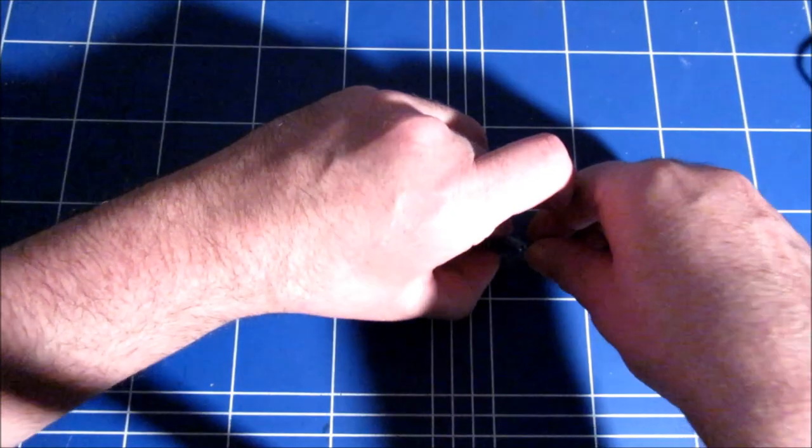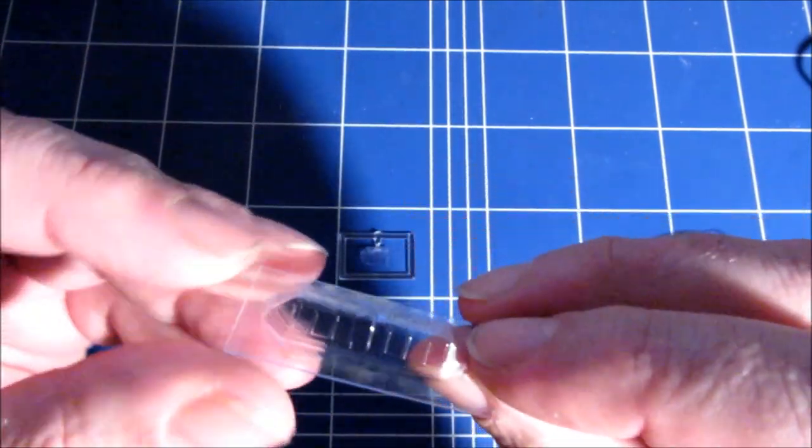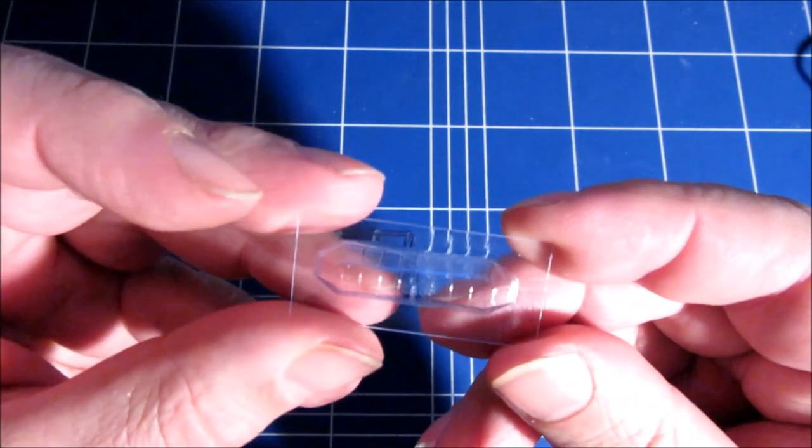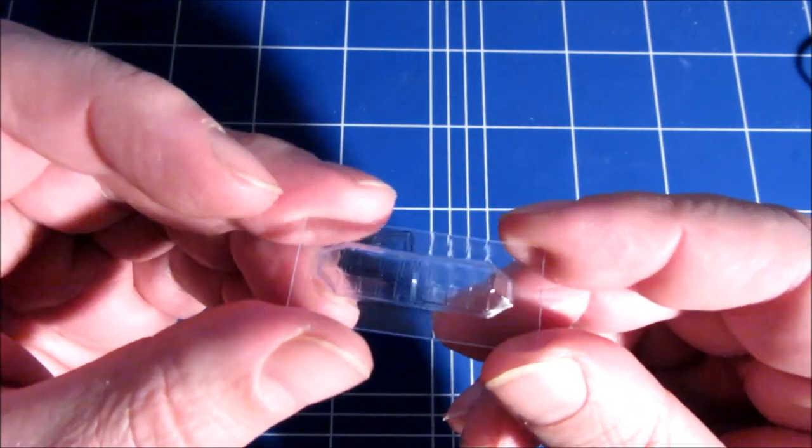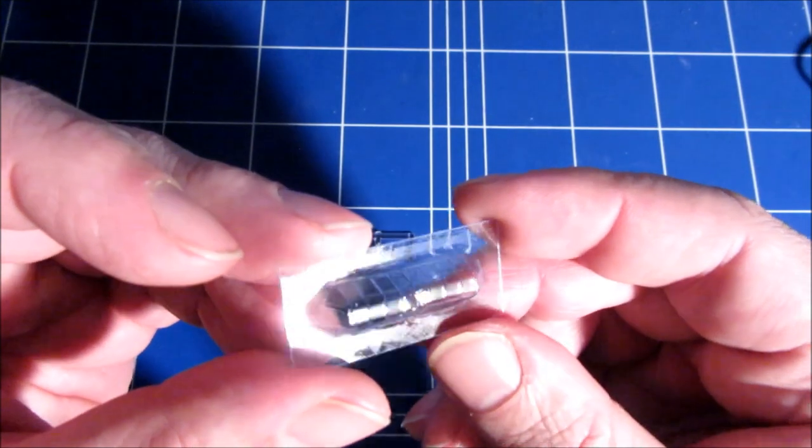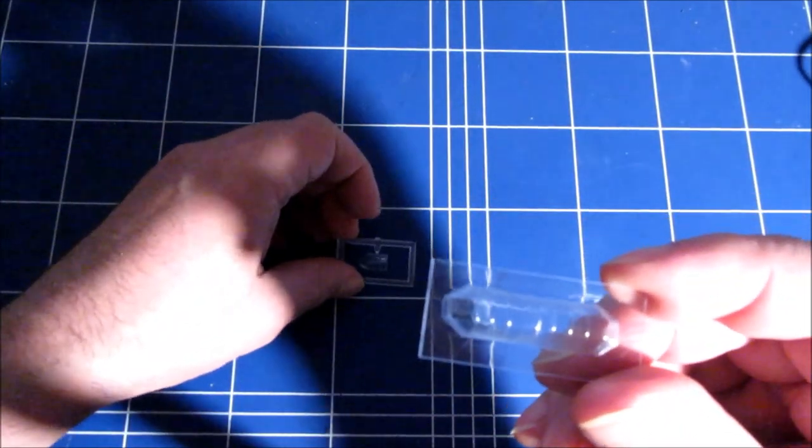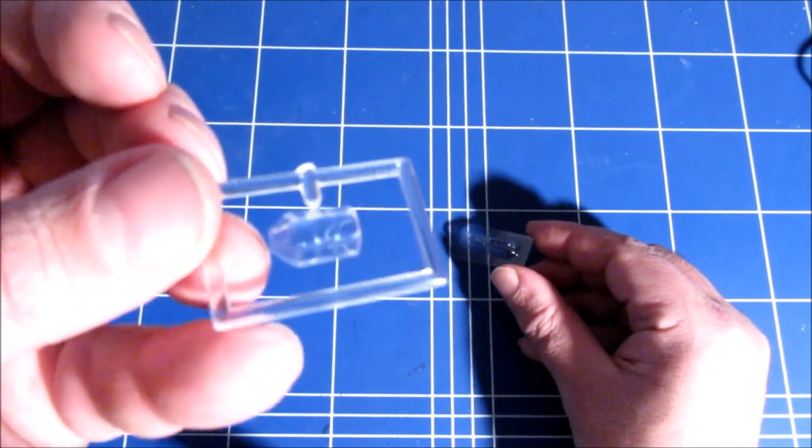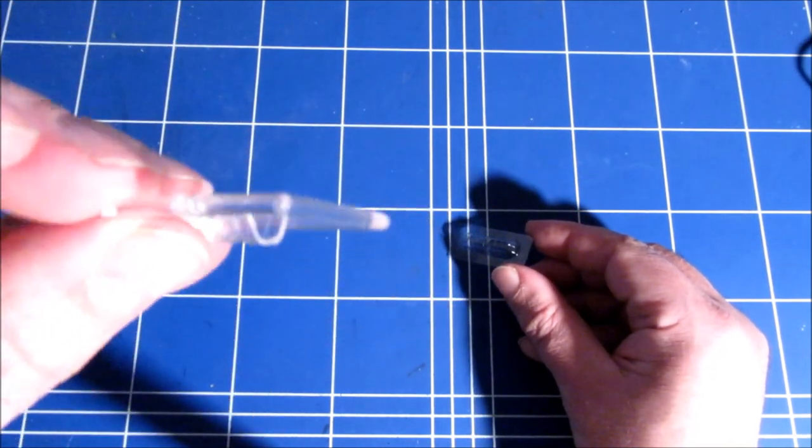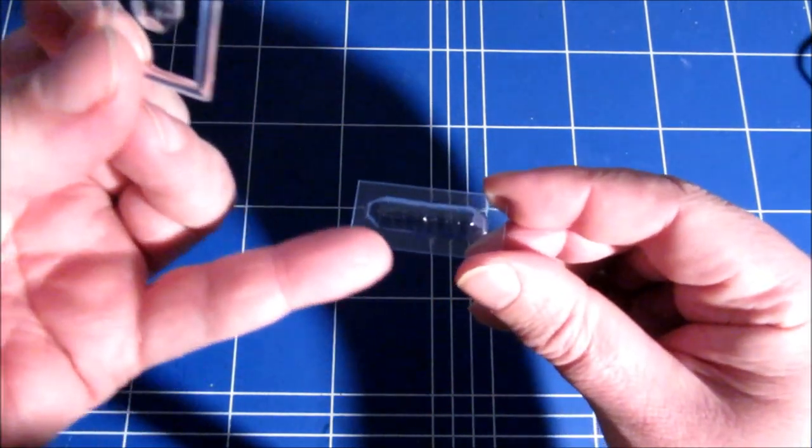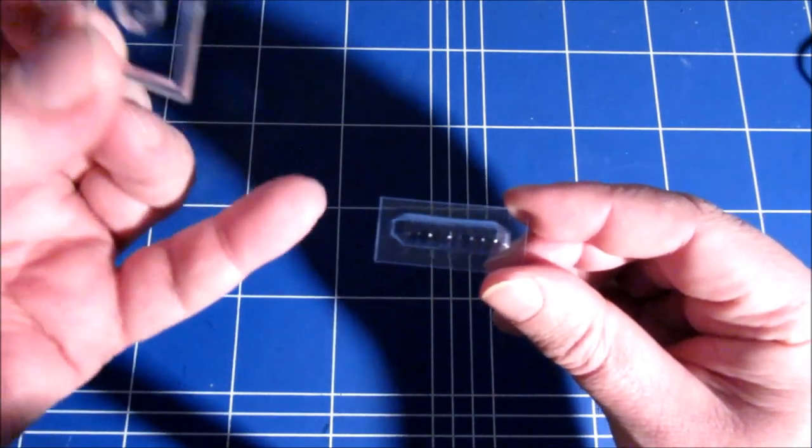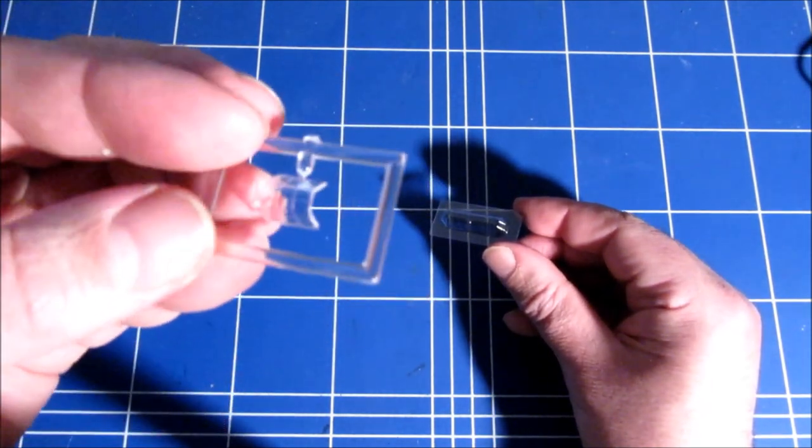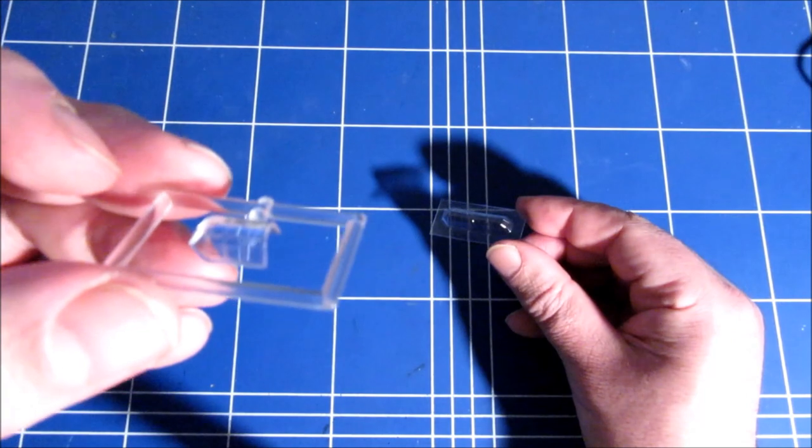There are two vacform canopies. The vacform looks very nice and thin, etc. But there's also an injection canopy included, which is of course much easier than carefully cutting everything out. The injection canopy is thicker but of course much easier.